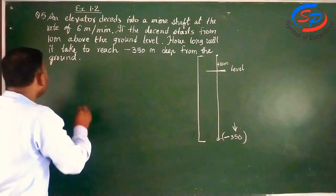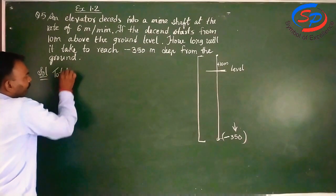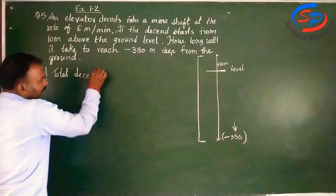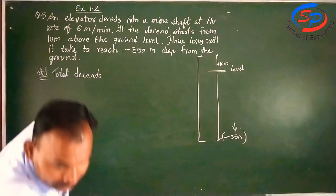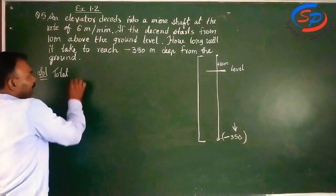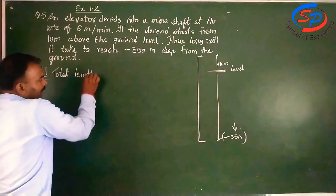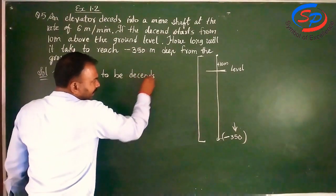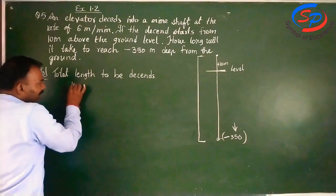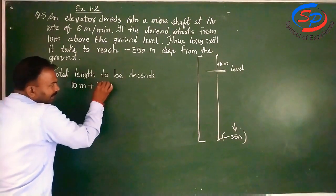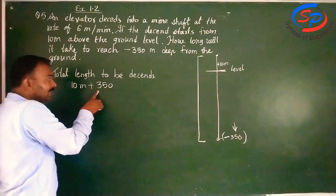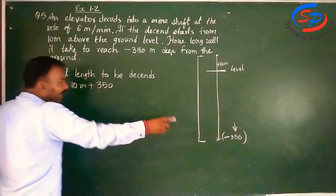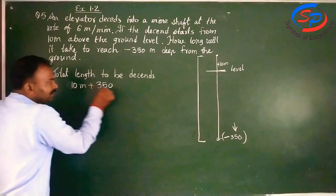Then we will divide it by this rate. So first of all, in the solution we will write: Total descends or depth or total distance to be descended or length to be descended. So that will be 10 meter plus 350 meter deep. We have added this. We have not taken this sign because if we take the sign, there will be difficulty in calculation. So our total distance is 360 meter.